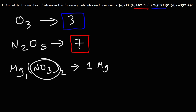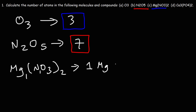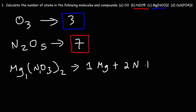Nitrate, NO3, is a polyatomic ion — an ion composed of many atoms. There's a 1 in front of nitrogen; if you multiply 1 times 2, you get 2 nitrogen atoms. We have a subscript of 3 in front of oxygen and a 2 for the polyatomic ion, so 3 times 2 gives 6 oxygen atoms. That's a total of 9 atoms: 1 magnesium, 2 nitrogen, 6 oxygen.